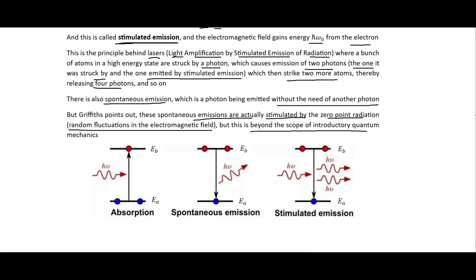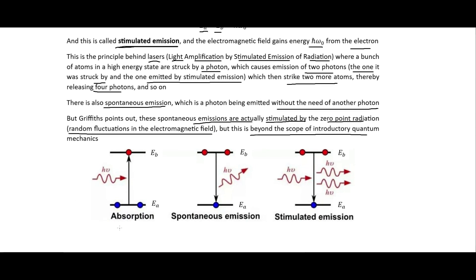Here we have pictorial representations of each of these processes. In absorption, the electron goes to the higher energy state E_b. In spontaneous emission, it goes down to the lower energy state E_a. In stimulated emission, the electron in the high energy state E_b absorbs and then re-emits a photon simultaneously, while also emitting another photon that causes the electron to go back down into the lower energy state E_a.